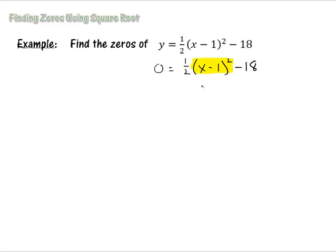We have to get rid of subtracting 18 and get rid of this multiplication. So the inverse operation of subtraction is addition. We're going to add 18 to both sides of the equation. And that's going to give us 18 equals one half times (x minus 1) squared.